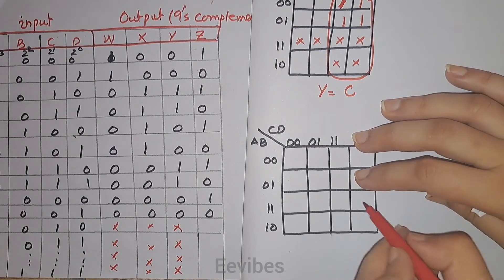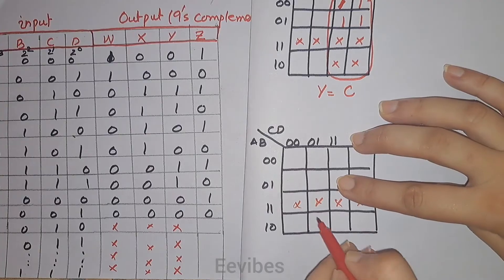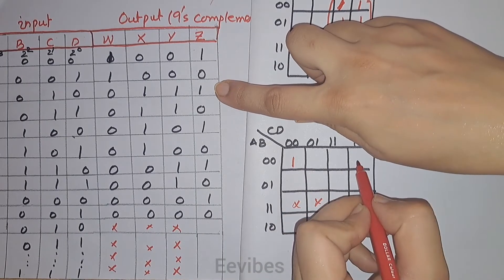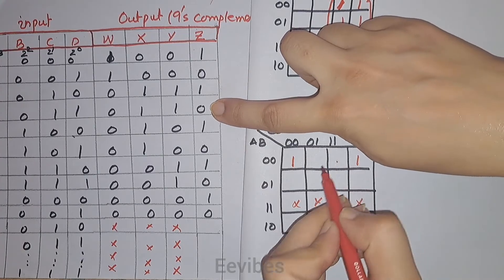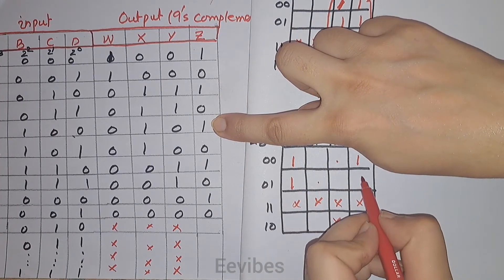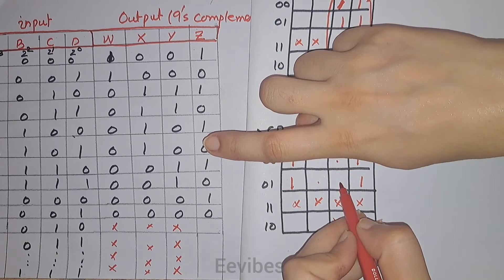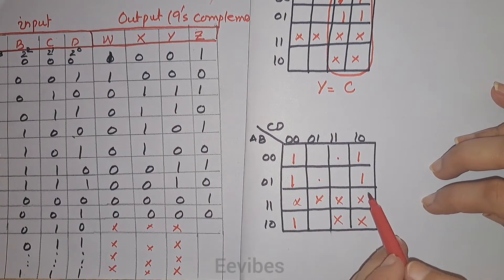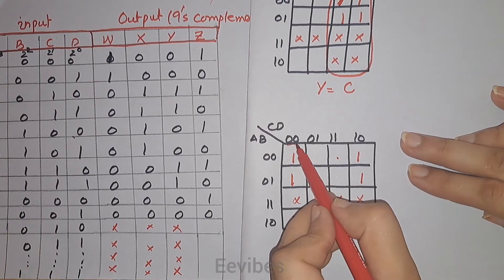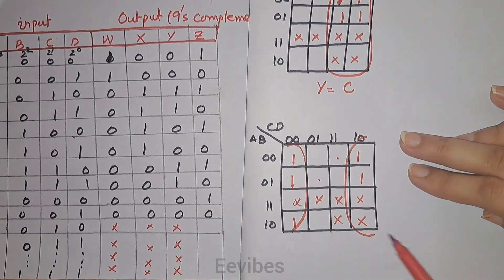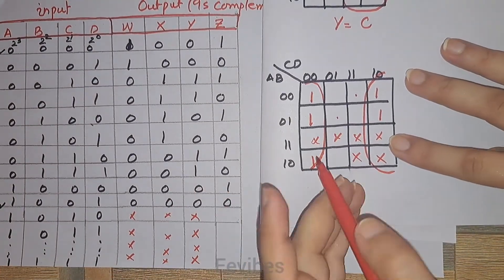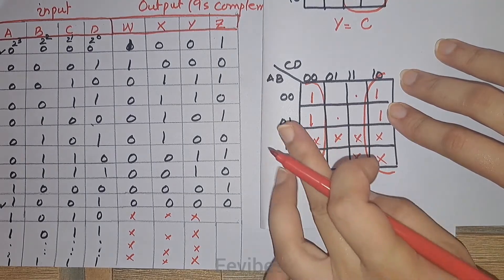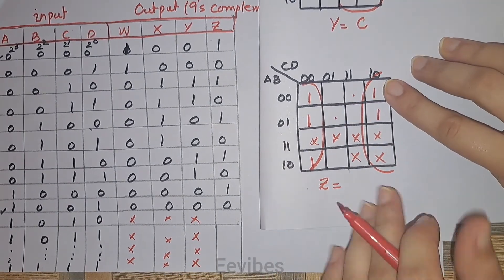For the last output function Z, we place the don't care conditions in the K-map. The 0th min term is 1, min terms 1 through 7 are 0, and the 8th min term is equal to 1. Combining the relevant boxes, the final expression for Z is equal to D complement.